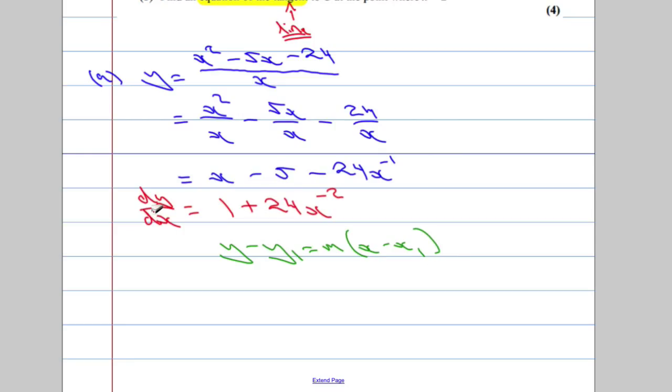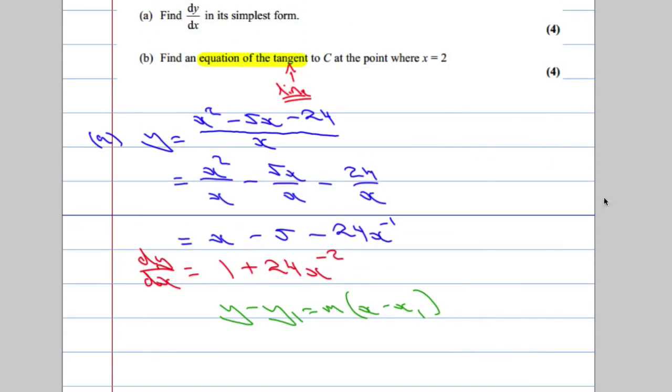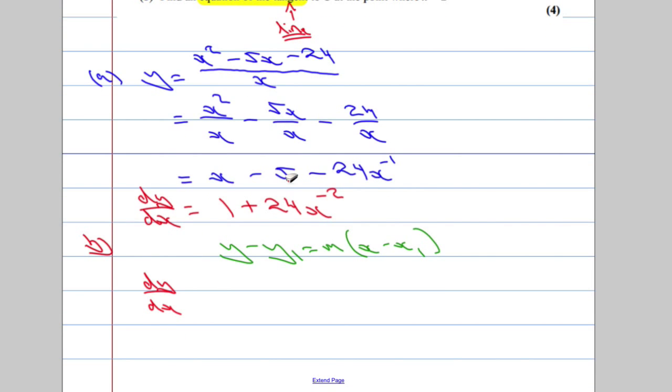So, you're going to need the gradient and a point. Now, we've got the gradient function. So, let's work out what the gradient is where x is 2. What's the gradient when x equals 2? What we're going to do is we're going to write dy by dx. This is part b, by the way. We're going to evaluate it. What is the gradient when x is equal to 2? So, substitute now x equal to 2. And here we get 1 plus 24 times 2 to the power of negative 2.